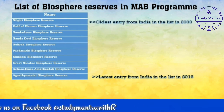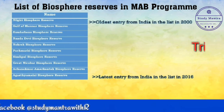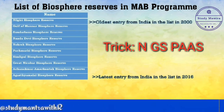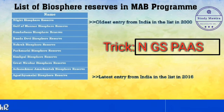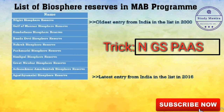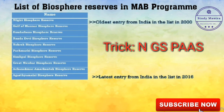To remember all 10 MAB biosphere reserves, just remember this trick: 'NGS PAAS'. If you want to remember it as a sentence: 'If you want good marks in GS, you need to PAAS (pass).' I have taken the first letter of all 10 biosphere reserves. N gives you 4 biosphere reserves out of 18 that are under UNESCO's MAB program — so all biosphere reserves starting with N come under the MAB program.